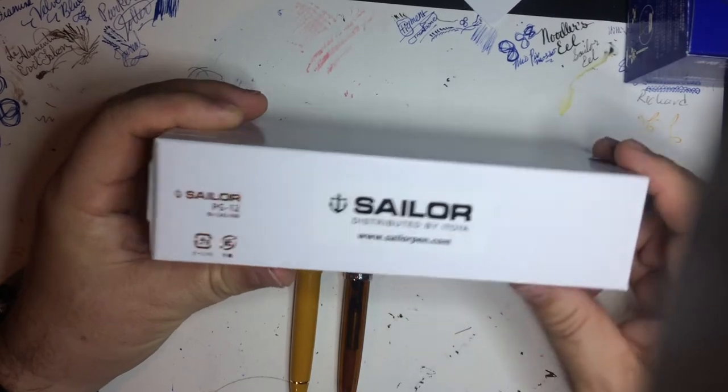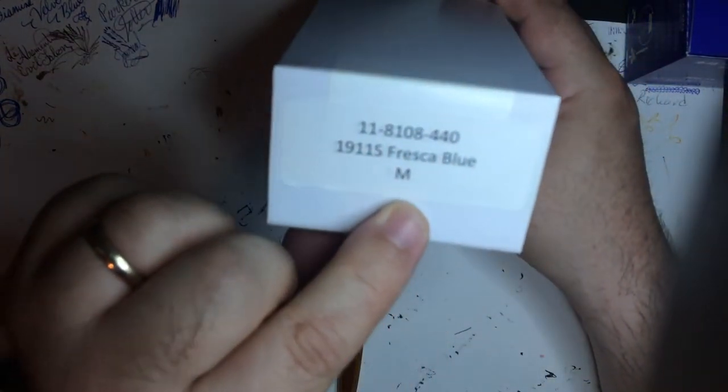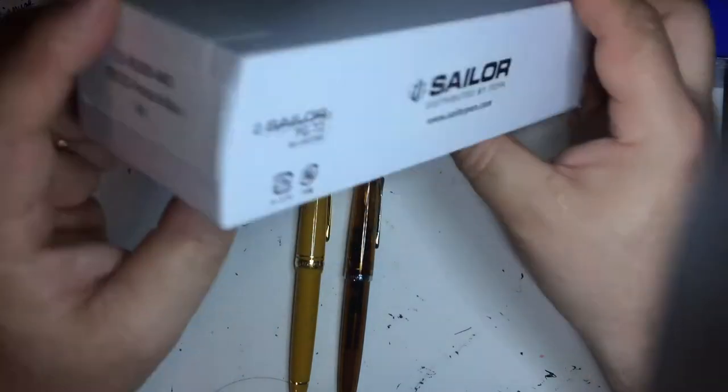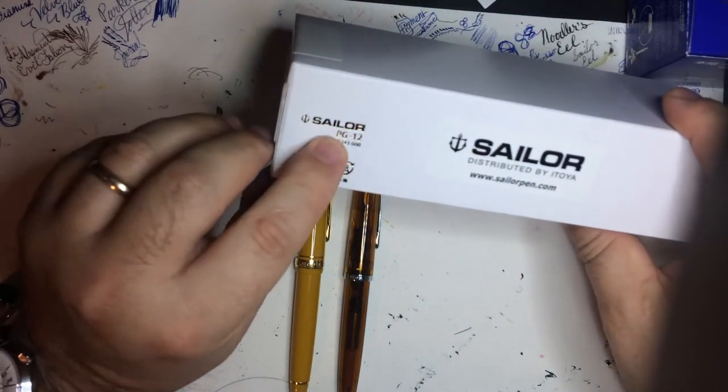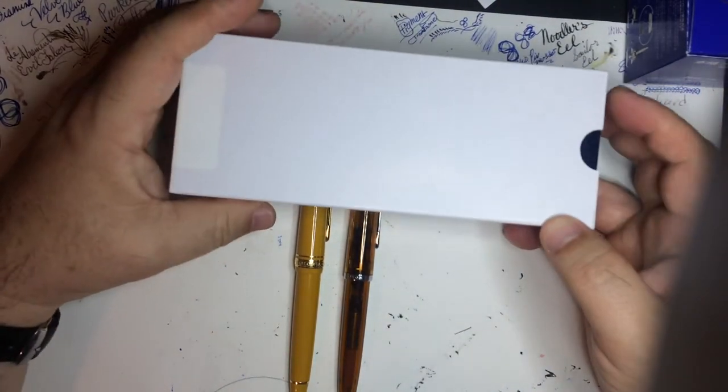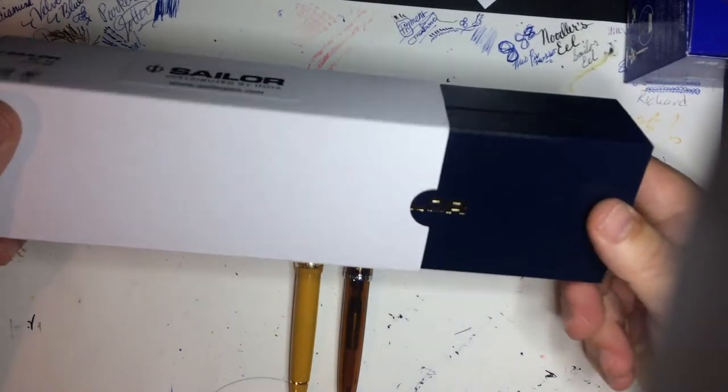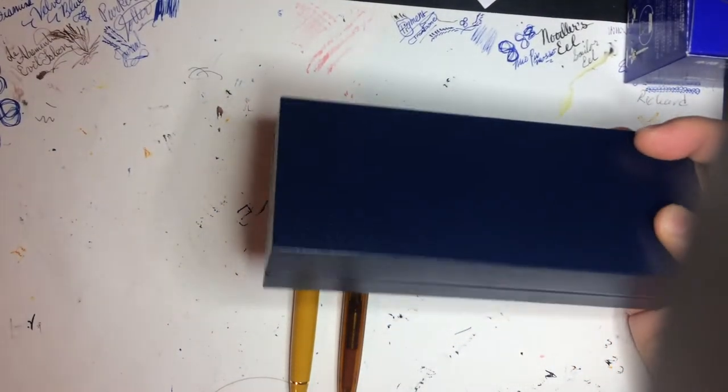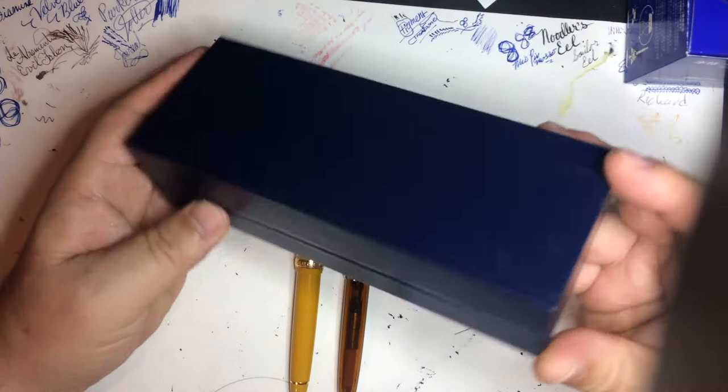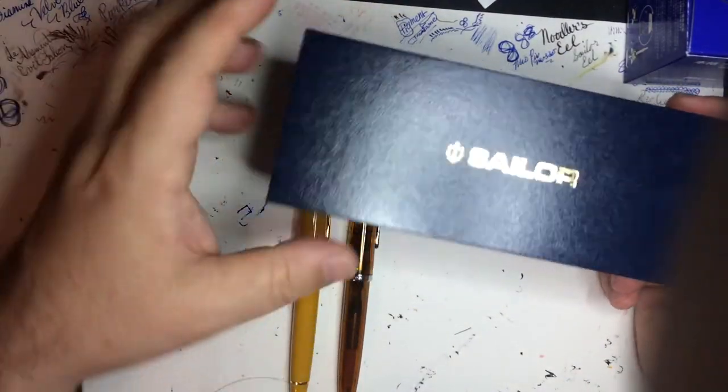This is a Sailor 1911 and you can see this is the medium nib on the Sailor 1911 S. Now I like this pen, this is a PG-12. I don't know what that means, I guess it's better than PG-13 right, and we will be unboxing this together. But the first surprise when I unboxed this pen was the sleeve was on upside down. Typically the Sailor name is faced with the box so I thought that was a little unusual.